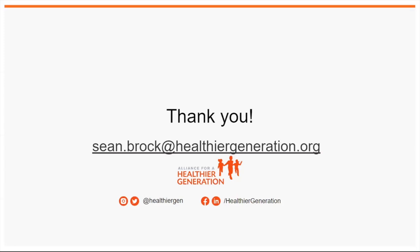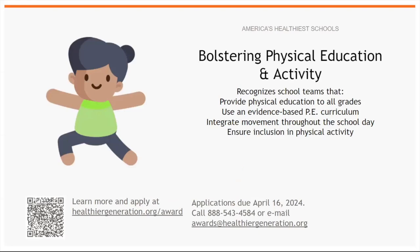My email address is on screen if you want any additional information — feel free to shoot me an email to connect and share some additional thoughts and ideas on building out strategies. I mentioned America's Healthiest Schools — our partnership with Kaiser offers the opportunity for schools to be recognized in one of nine areas of whole child health. The physical education and physical activity space is our most awarded and applied-for topic area. Applications are due by April 16th — you can scan the QR code on screen and it takes you directly to the award page.